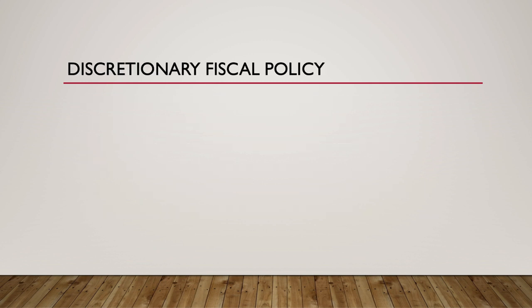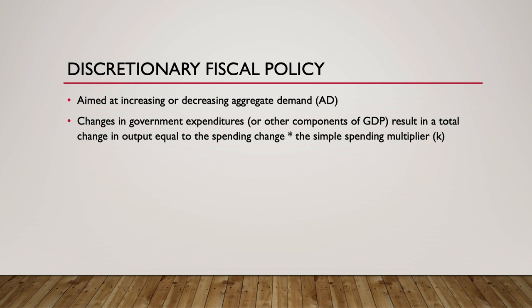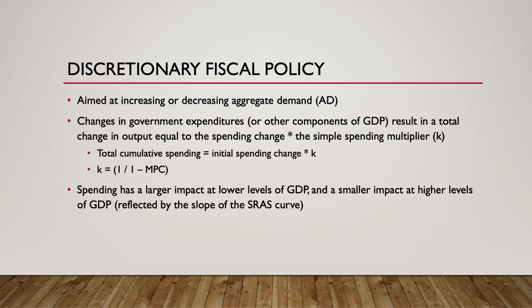Discretionary fiscal policy is aimed at increasing or decreasing aggregate demand, utilizing the tools of taxation and government spending. Changes in government spending or other components of GDP cause income and output to increase by the spending change multiplied by the spending multiplier. Government spending has a larger impact on economic output at lower levels of output, and the short-run aggregate supply curve is flatter at lower levels of output and steeper at higher levels of output.